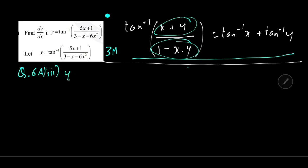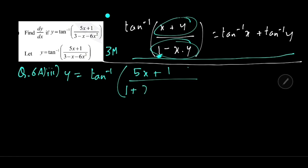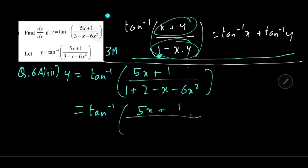The question is how to convert the expression into this format. y equals tan inverse of 5x plus 1 upon denominator. We need 1 minus (product) in denominator. So take minus common from denominator: 3 minus x minus 6x squared becomes 1 minus, then factor 6x squared plus x minus 2. Factorizing this quadratic gives factors 3x plus 2 and 2x minus 1.